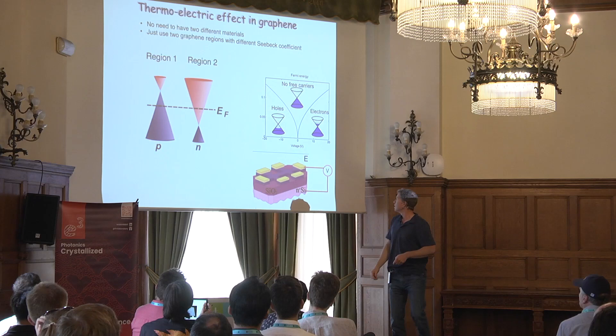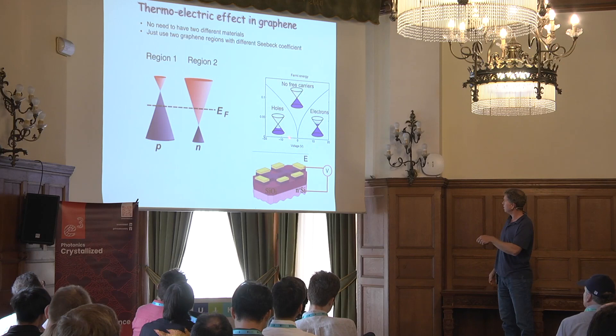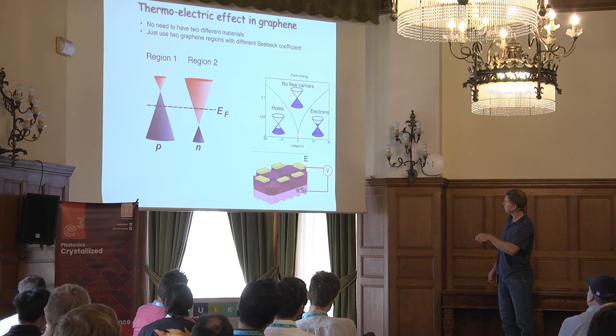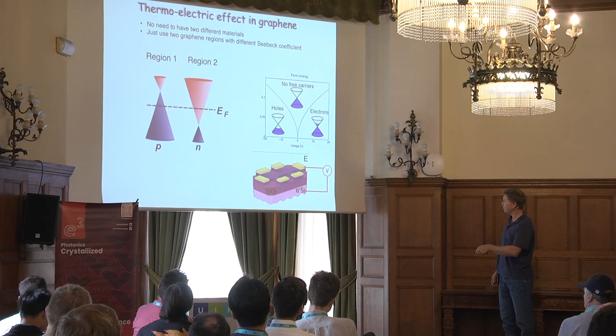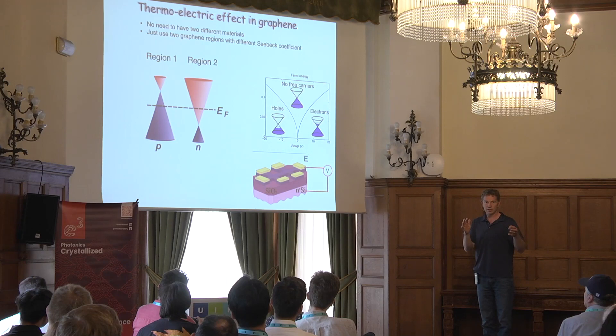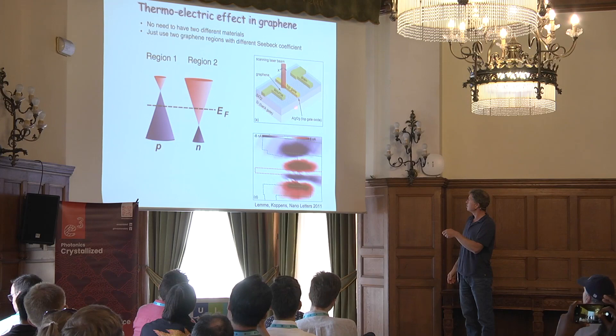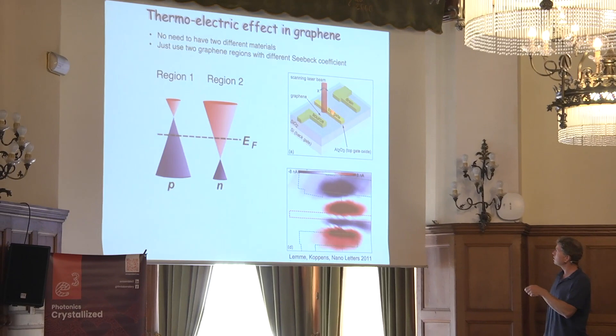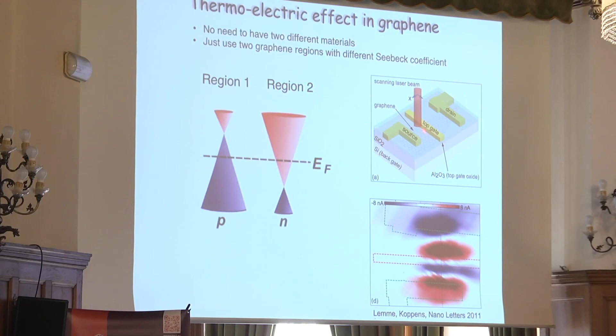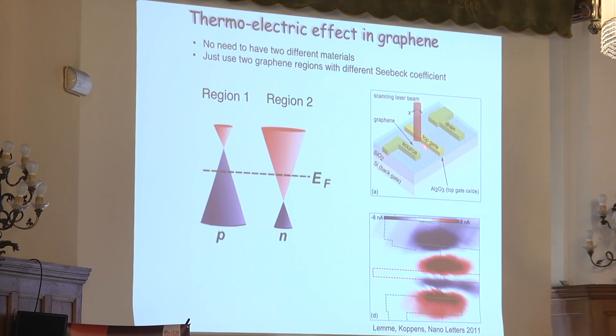If I apply a voltage, I can plot the Fermi energy as a function of voltage. On the left side I get hole doping, then there is no doping in the middle, and on the right side there's electron doping. That's a typical gating of graphene. I can do this in two different regions with two different gates, or — as in work we did back in 2011 — use a narrow top gate in combination with a back gate. Then you get two different regions with different doping, giving a difference in Seebeck coefficient, which leads to a photothermoelectric effect.